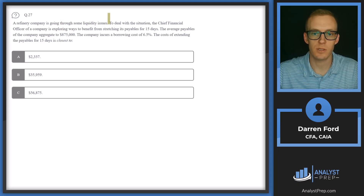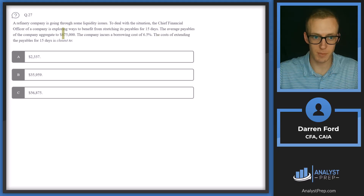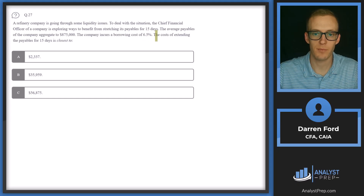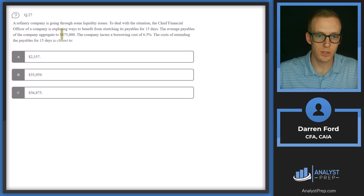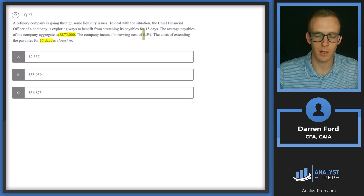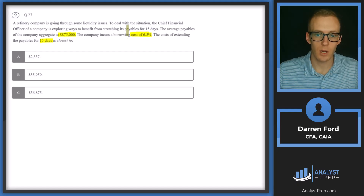Question 27: A refinery company has liquidity issues. The CFO is exploring stretching payables for 15 days. Average payables aggregate to 875,000, and the company incurs a borrowing cost of 6.5%. To extend payables for 15 days, the company needs to borrow money — borrowing at 6.5% annualized on the 875,000, but only for 15 days.